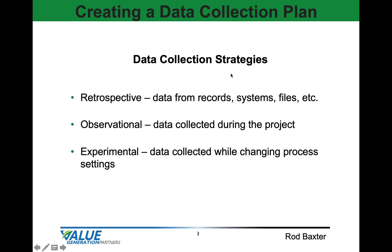Now let's talk about data collection strategies. The first two are passive data collection strategies. Retrospective is historical data — that's data from records, from systems, from files; data that's been collected sometime in the past that we're now using in our data collection plan. Then there's observational — data that's collected during the process that's in operation, that you or someone assigned may be collecting while the process is happening.